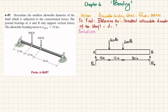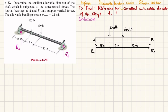First step: if you remove the general bearing at point A, you will have a reaction force equal to Ra, and if you remove the general bearing at point B, you will have a reaction force Rb. I have drawn the free body diagram of this beam, so let's find Ra and Rb using the equations of equilibrium. The first equation of equilibrium is that the sum of all moments about point B equals zero, taking counterclockwise moment as positive.